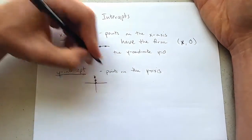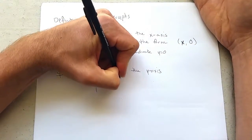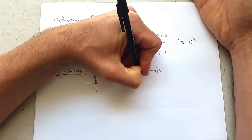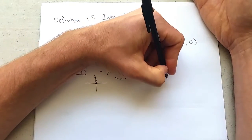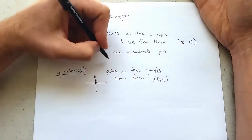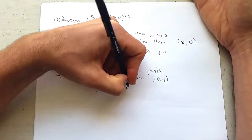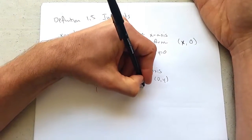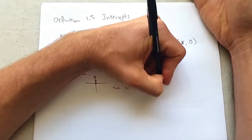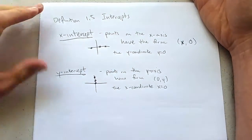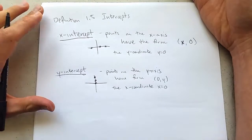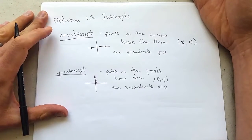So they all have the form (0, y). These have an x-coordinate of x equals zero. So x-intercepts and y-intercepts.